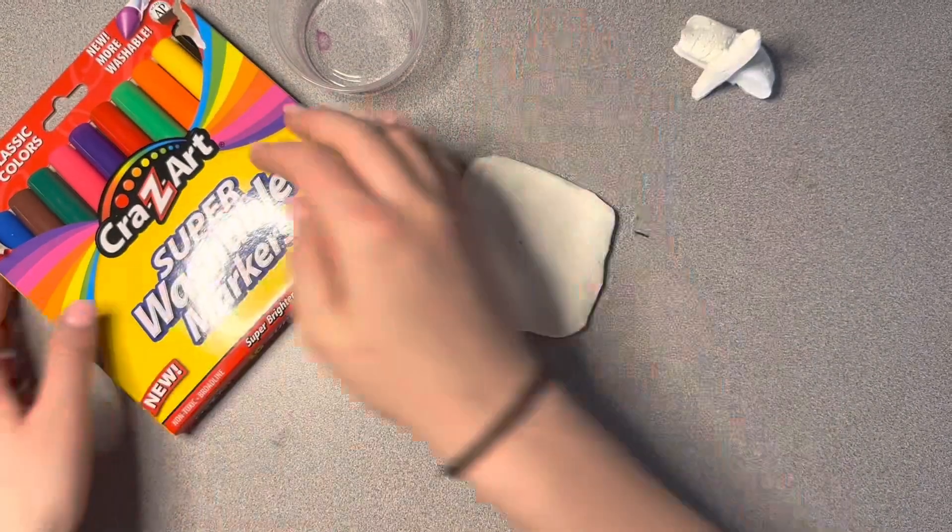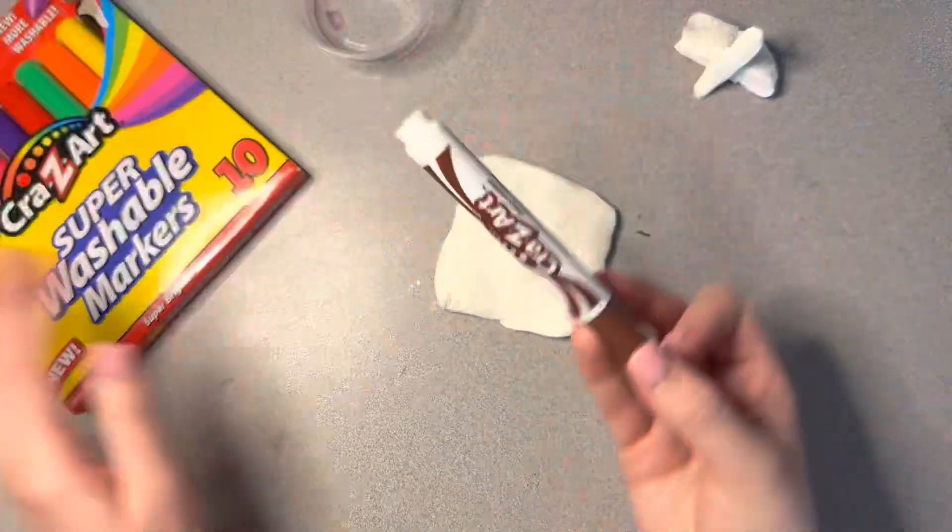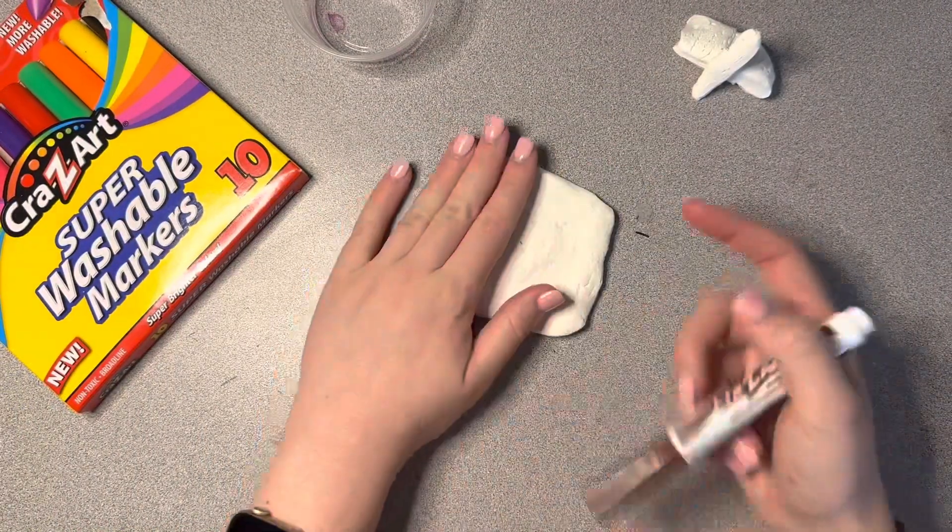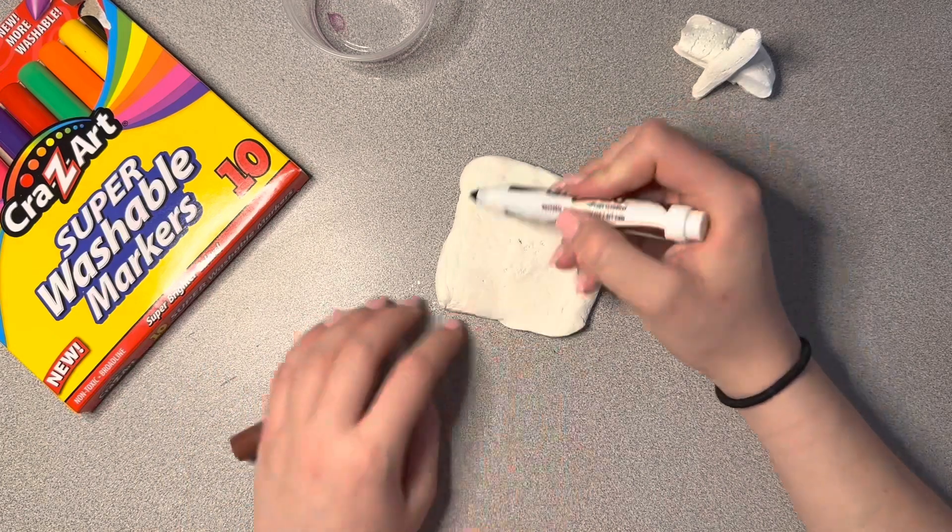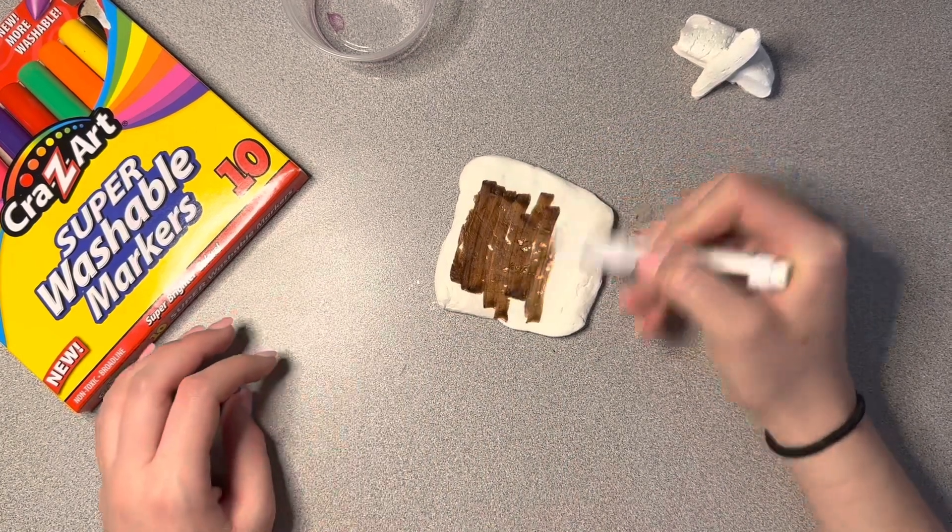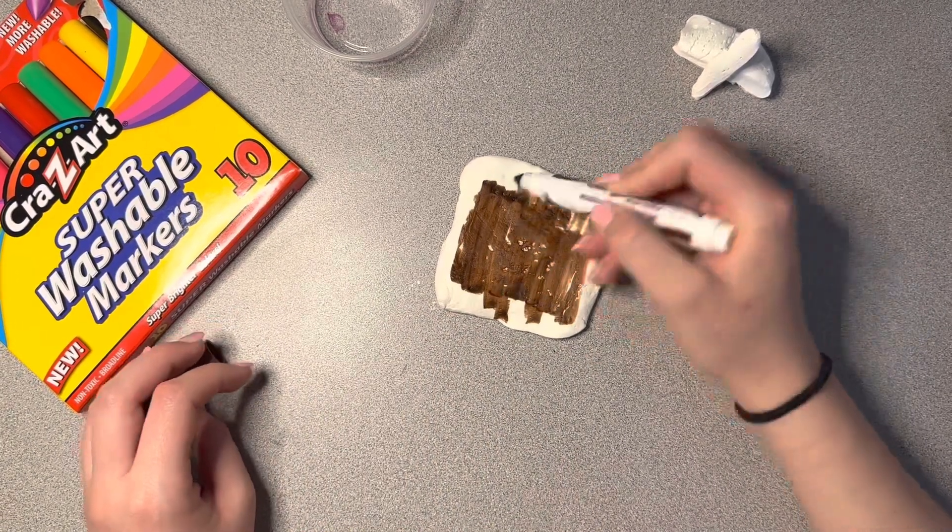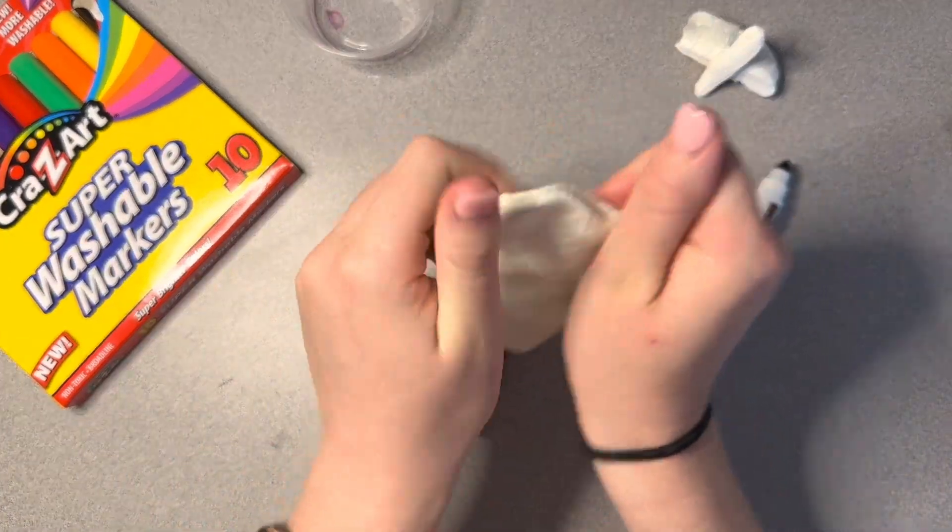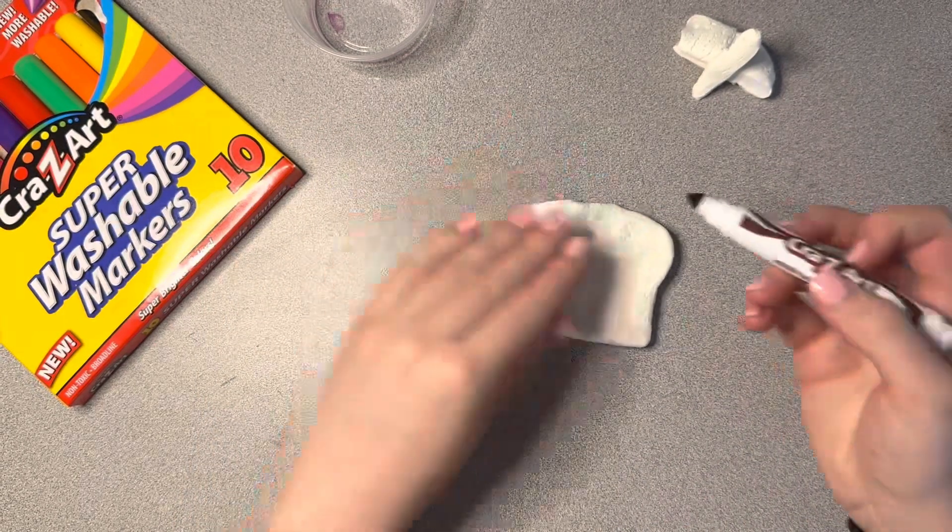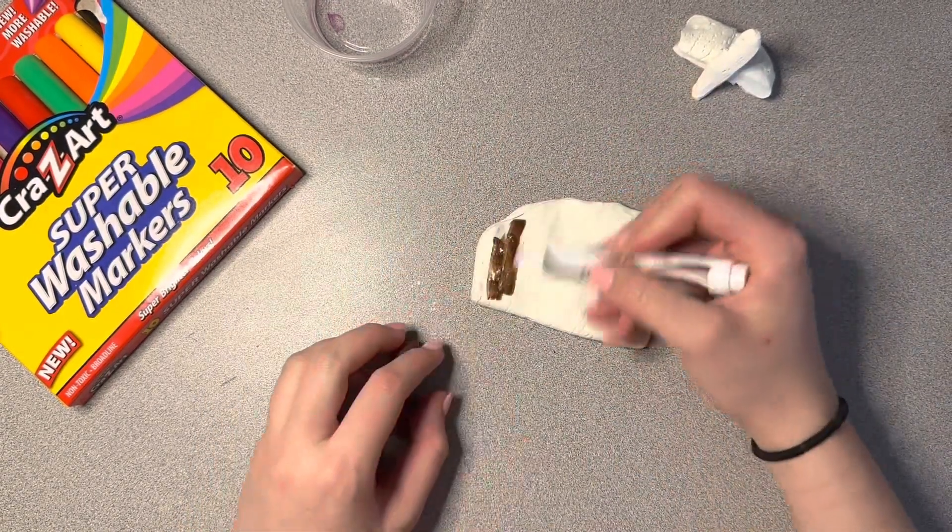I want it nice and flat. And my base color of the cookie is just going to be like a regular tan colored cookie. So I'm going to just color this side, fold it, and then squish it again.